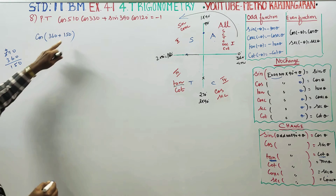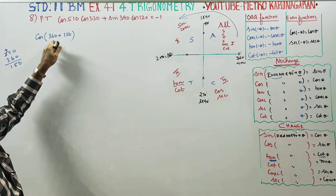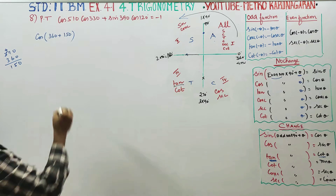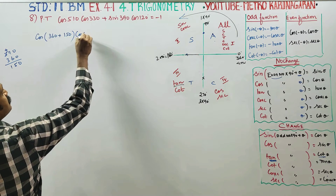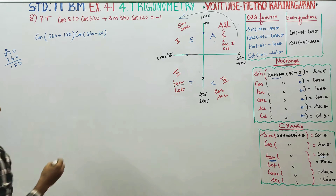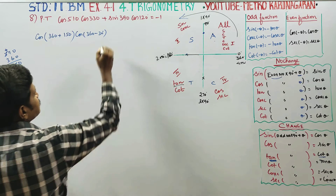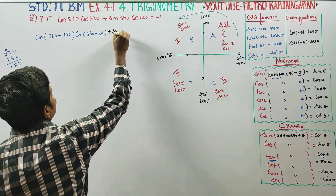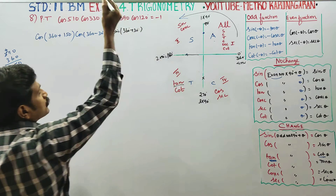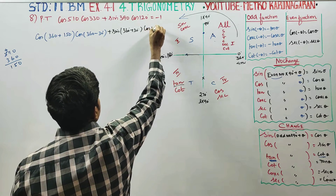You can rewrite the expression. Cos 510 becomes cos 150, which is cos of 360 minus 30. You can also add plus sin of 360 plus 30. Then cos 120 can also be included. That is how you can set up the terms.